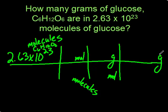So what do we know? We know that one mole is 6.02 times 10 to the 23rd molecules. And we know that one mole is equal to the gram molecular mass or the molar mass.